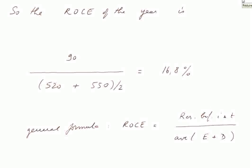So the ROCE of the year, that is the return on capital employed of the year, is 90, the operating result, divided by 520 plus 550, divided by 2. And this yields 16.8%. And the general formula for the ROCE is result before interest and taxes, which probably is better to call simply enough operating result, divided by the average equity plus debt. And remember when I talk about debt, we mean the costly debt.